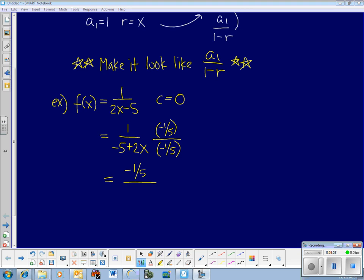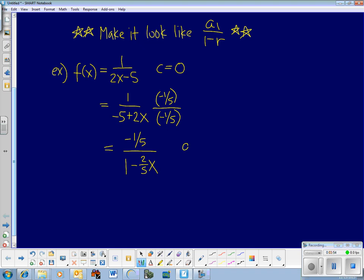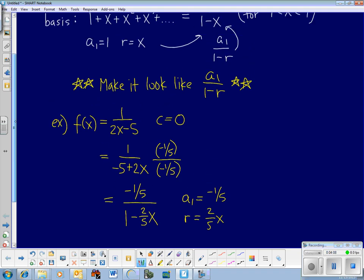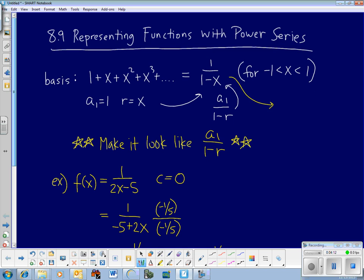You can multiply the top and bottom by anything you want as long as you do the same thing. So see what that does. It takes the top and makes it negative 1 fifth. That's fine. There are no specifications on what the top needs to be. The number that matters is this 1. I have to change it into a 1. Now the bottom, both terms are going to be multiplied by negative 1 fifth. So I get a 1 minus, let's call that 2 fifths x. Let's call it 2x over 5 or however you want to arrange it. I'm just going to call it 2 fifths x. So we have achieved our goal. We wanted to make it look like a₁ over 1 minus r.